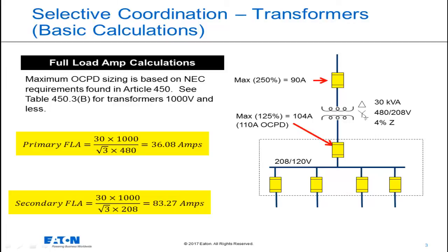We use Table 450.3b from the National Electrical Code to determine the maximum size fuses for primary and secondary mains. The maximum size of the primary overcurrent protective device is 36.08 amps multiplied by 2.5, or 90 amps. The maximum secondary main overcurrent protective device is 83.27 amps multiplied by 1.25, which is 104 amps. Since we can't purchase a 104 amp fuse, we go to the next higher standard size, which is a 110 amp fuse.